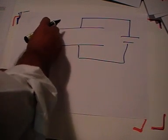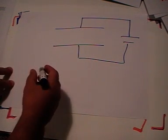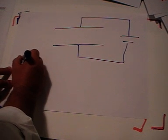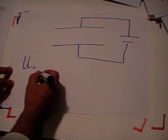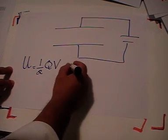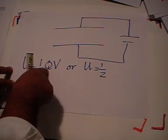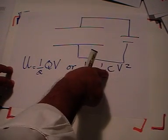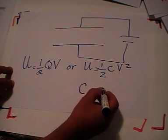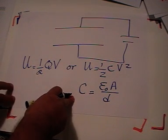Let me draw this. You have a parallel plate capacitor connected to a voltage battery, so the voltage across the two plates is constant. The energy stored in a parallel plate capacitor is U = ½QV, where V is the voltage. Equally, since Q = CV, we can write U = ½CV². C is the capacitance, which we will discuss in more detail next time. The capacitance is C = εA/D.